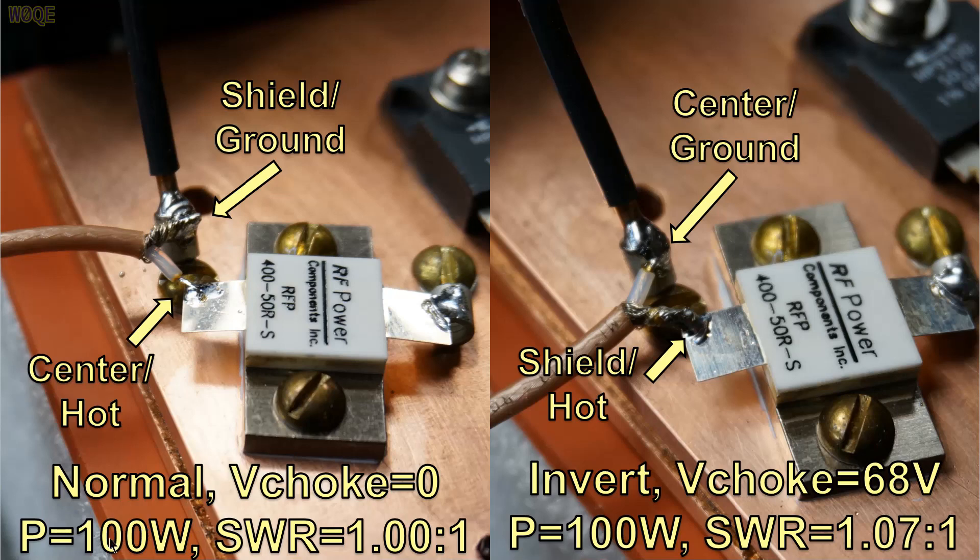The common mode choke is just to the left of the picture and we see the shield connecting to the chassis and the center connecting to the hot side of the resistor. The power meter indicated 100 watts and SWR of 1.00 to 1. There was no choking voltage across the common mode choke indicating we wouldn't need a common mode choke in this application at all.